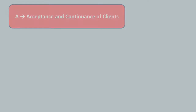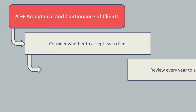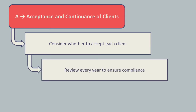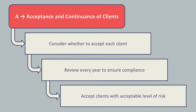The A is for acceptance and continuance of clients. The audit firm must consider whether they should accept every engagement. Once they have accepted the client engagement, they must then review every year to ensure the entity should continue to be their client. The key issue is that the audit firm must only accept clients with an acceptable level of risk.